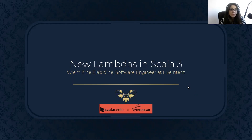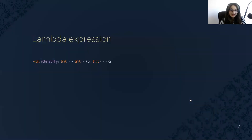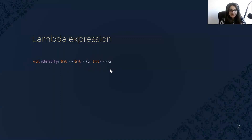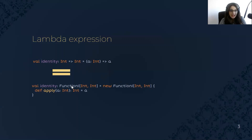In this presentation, I will go through some features in Scala 3 that improve the way we use and define functions and type lambdas. Let's start with a simple lambda expression. This is how we define a lambda expression — we assign it to a value and we call this a function. This type and syntax is a shorthand for Function1 because it has only one argument.